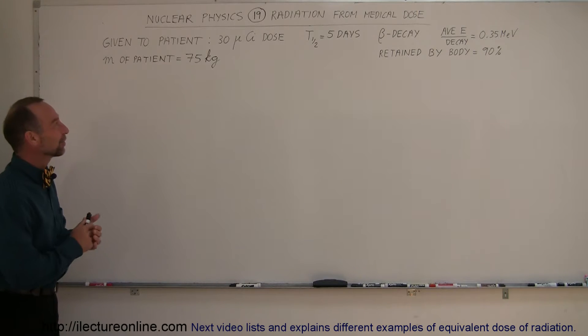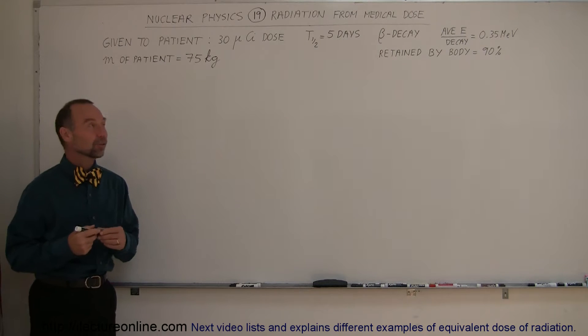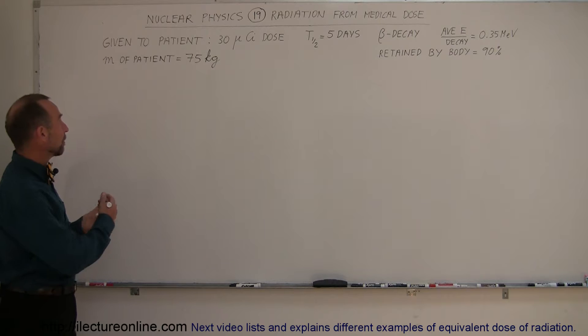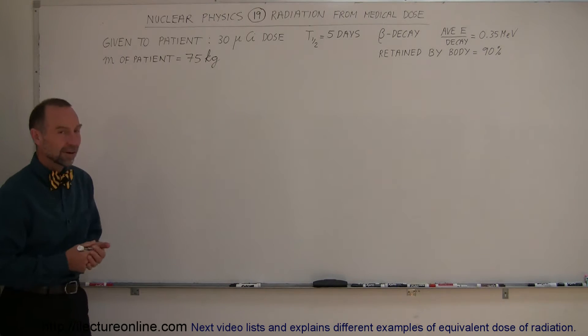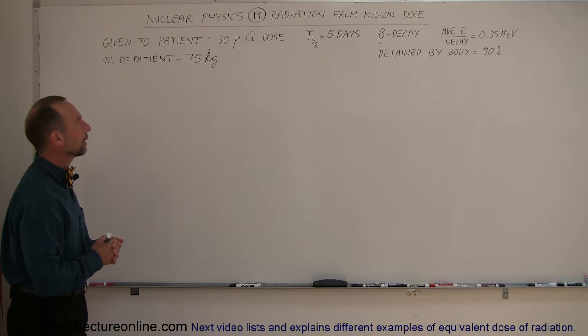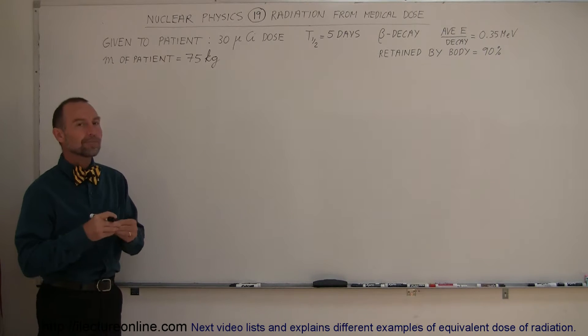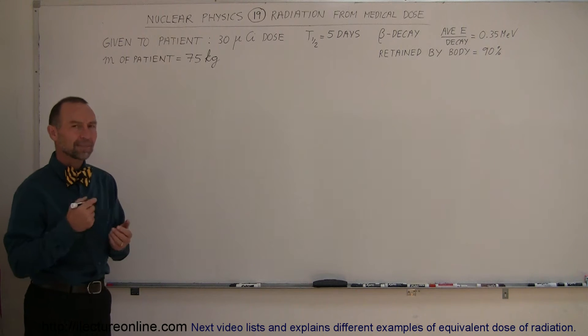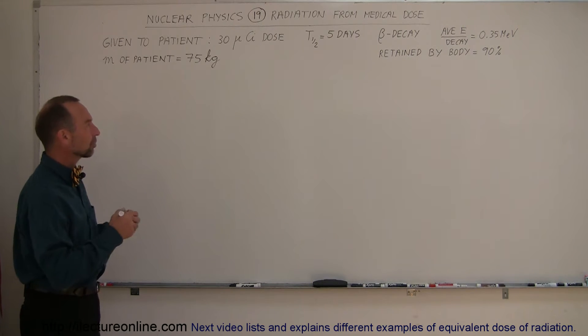All right, continuing with our nuclear physics series number 19, we're going to talk about radiation received through a medical dose. Let's say, for example, that your patient with a body mass of 75 kilograms, 160-170 pounds, and you're receiving a dose equal to 30 microcuries.